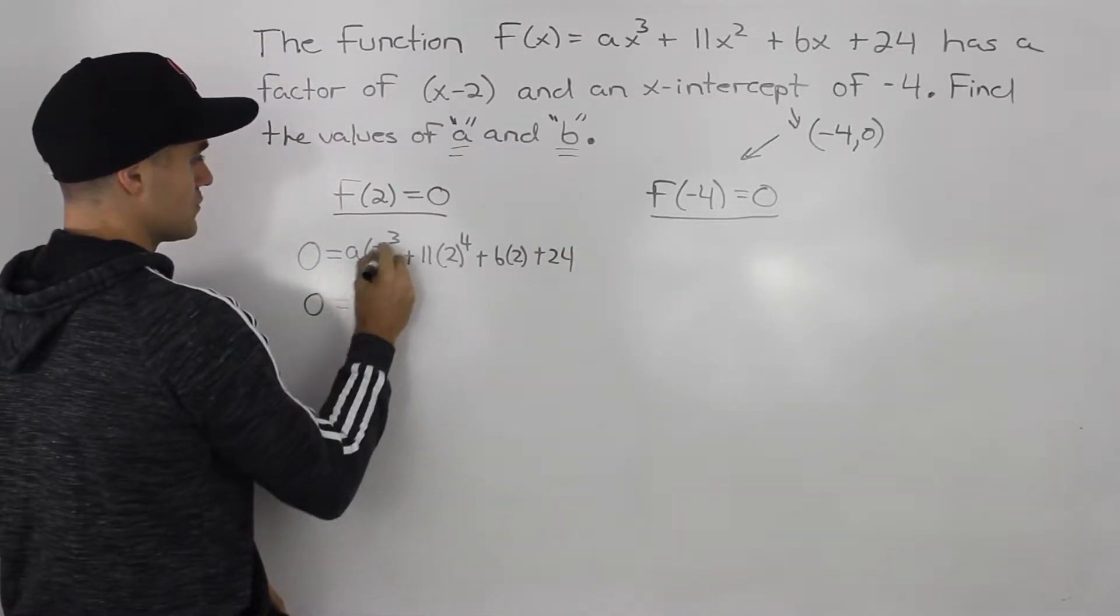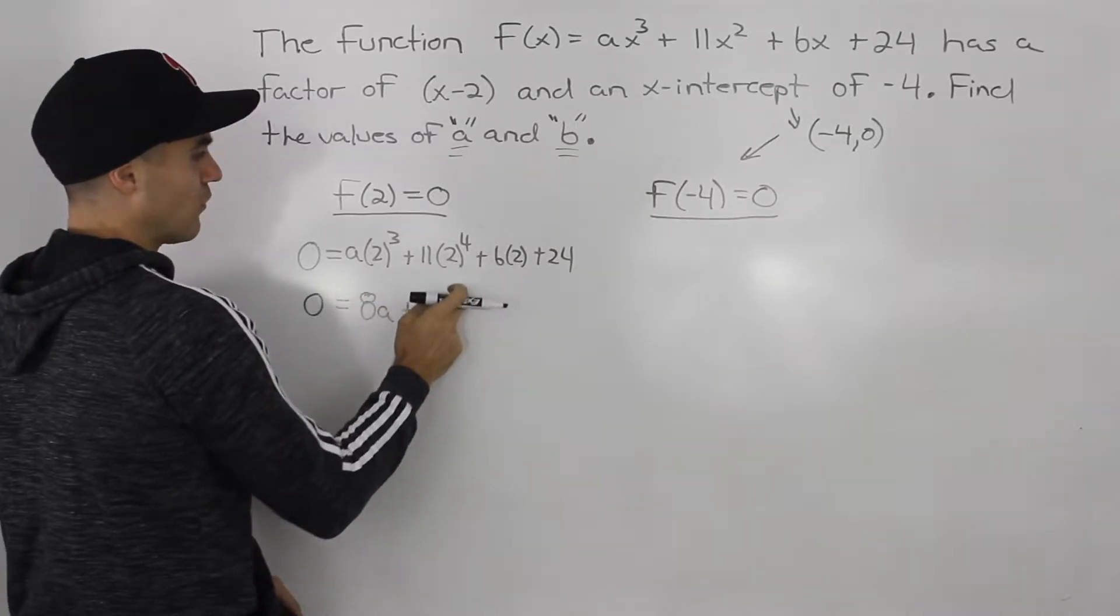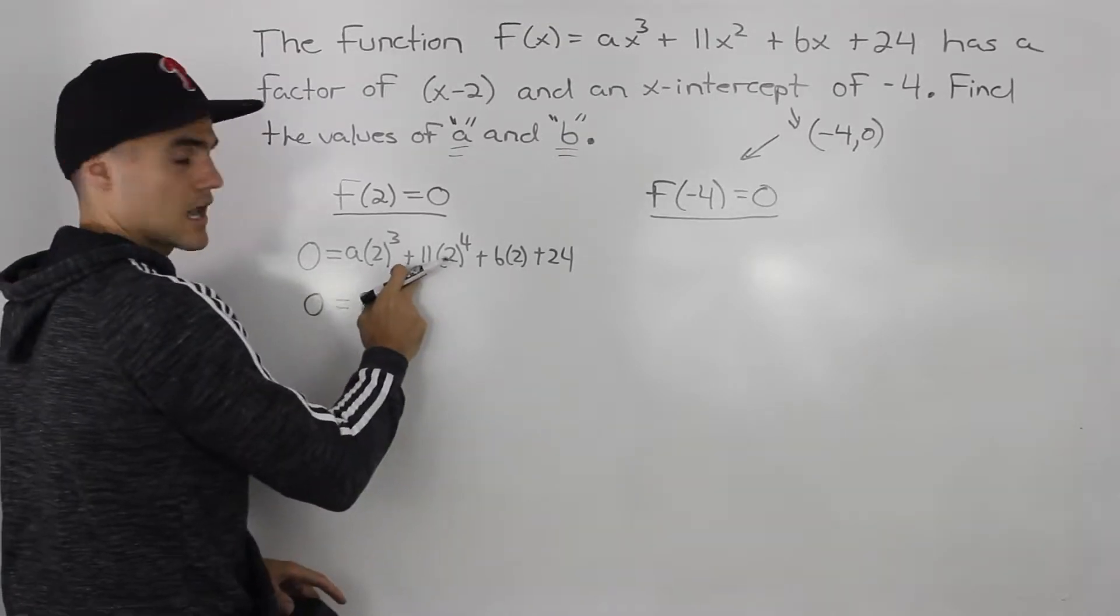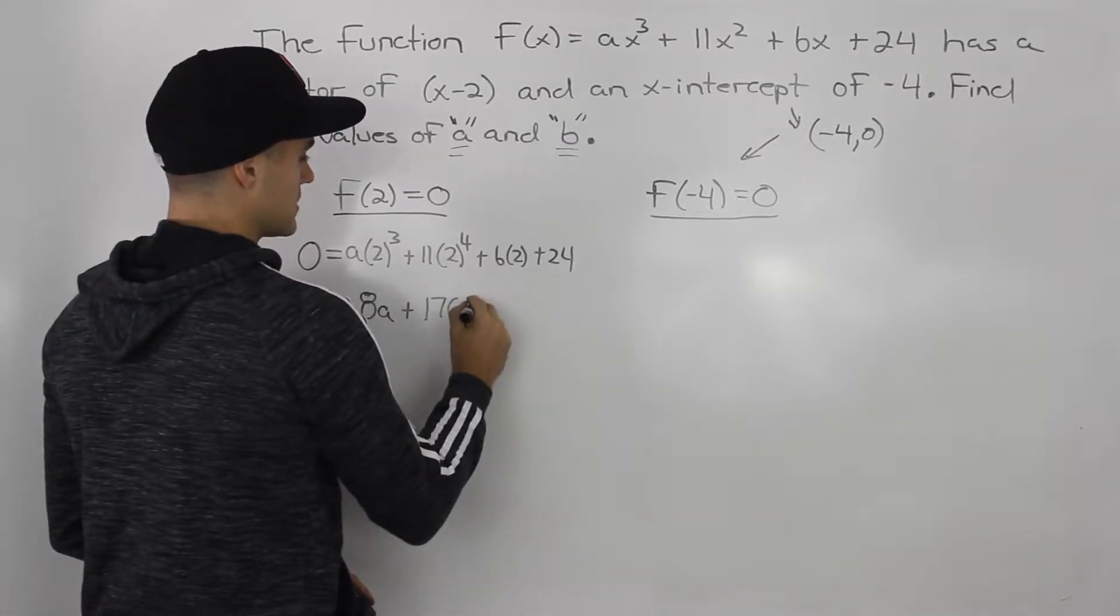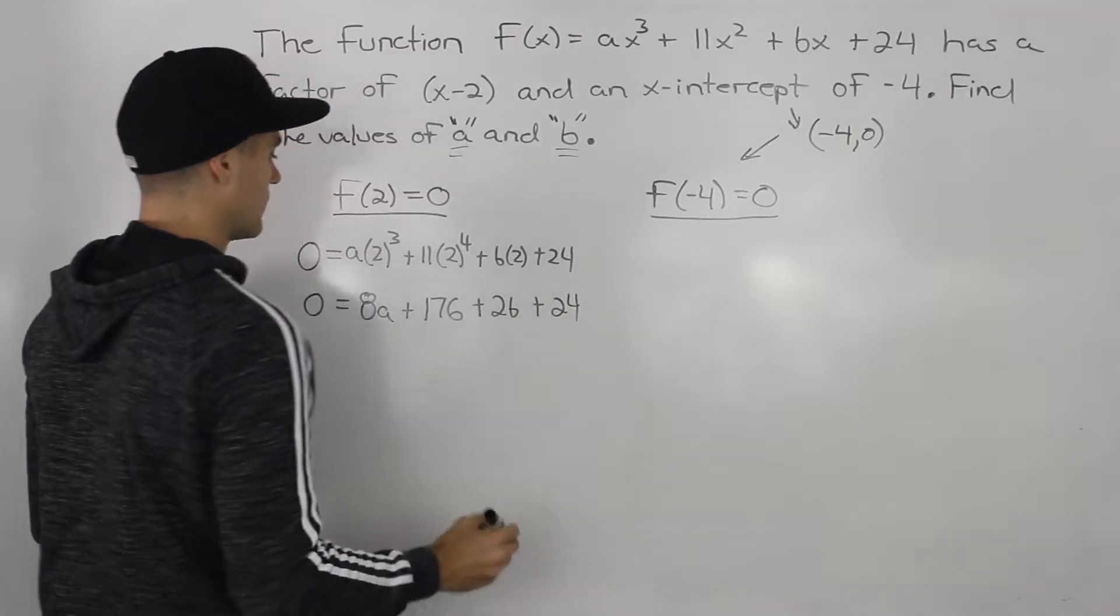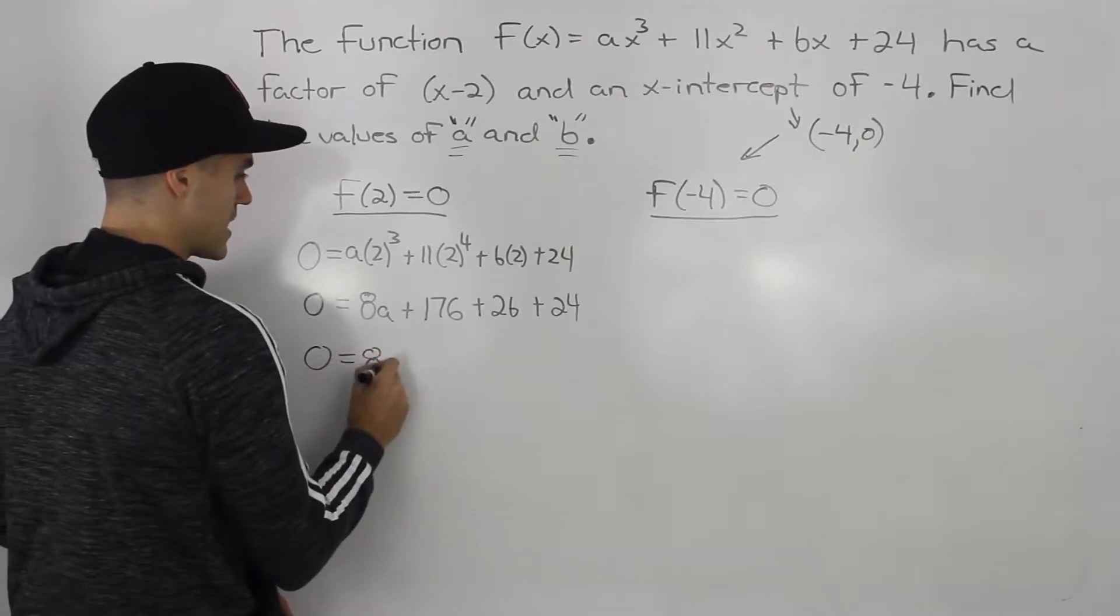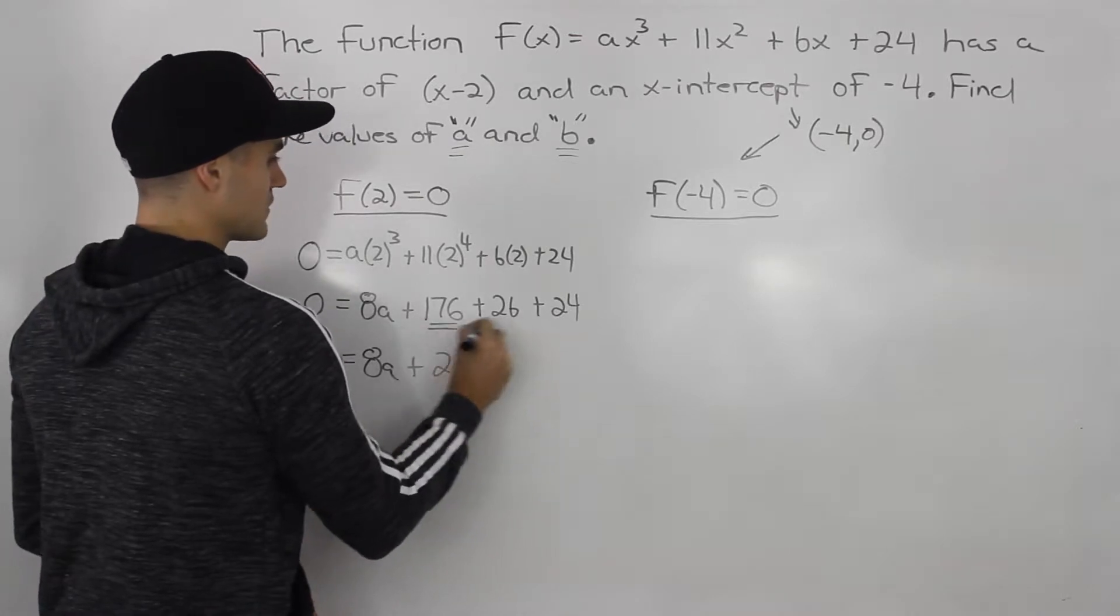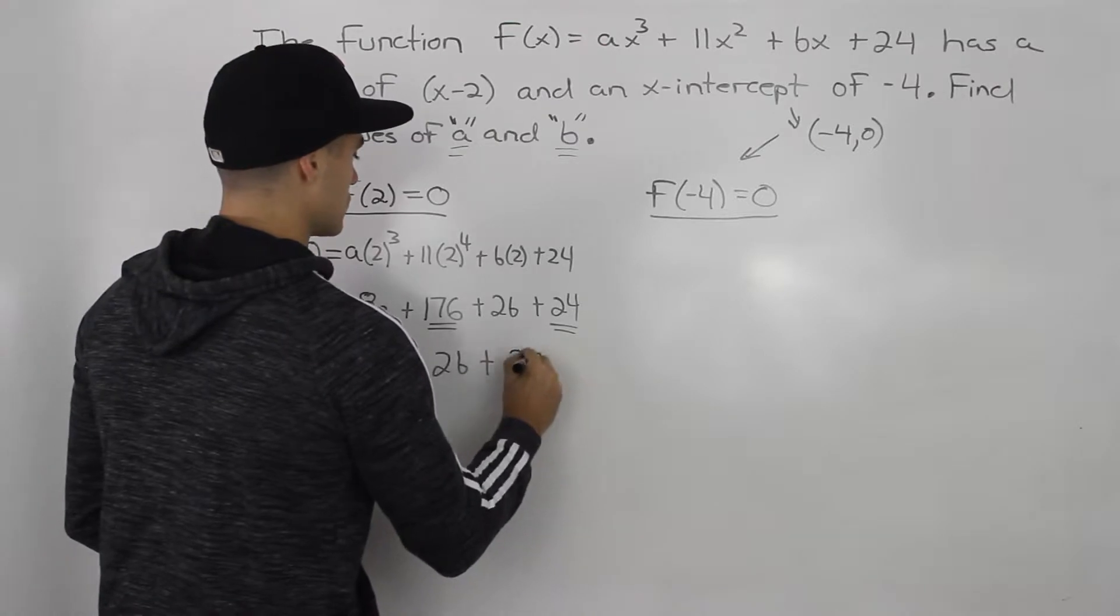So 0 equals 2 to the power of 3 is 8. So we have 8a plus 2 to the power of 4 is 16. And then 16 times 11 gives us 176. 2 times b is just 2b plus 24. All right, so to simplify this a little bit further, so we have 8a plus, let's put this 2b here, plus 176 and 24. Notice how those are like terms. That gives us 200.